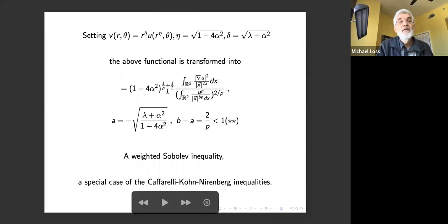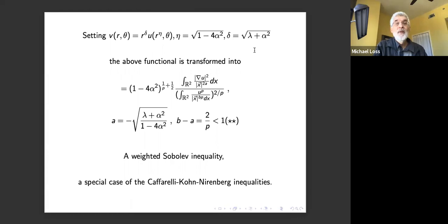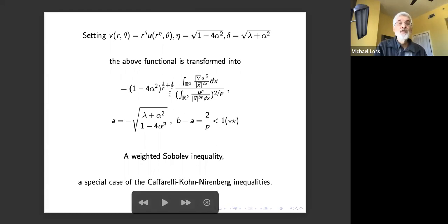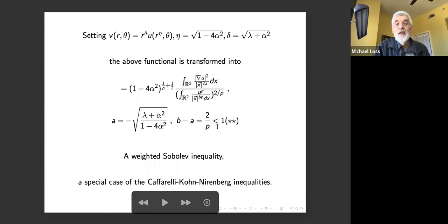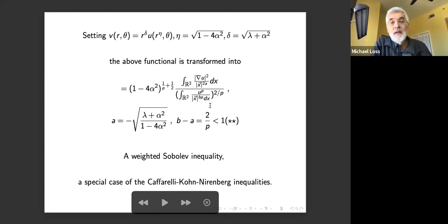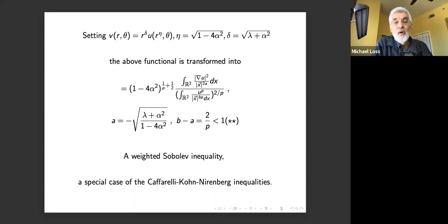Now make the substitution v(r,θ) = u(r^η, θ) · r^δ, where η = √(1−4α²) and δ = √(λ + α²). Under this change of variables the functional transforms into a weighted Sobolev-type ratio — specifically a Caffarelli-Kohn-Nirenberg (CKN) inequality with parameters a and b determined by η, δ, and p.